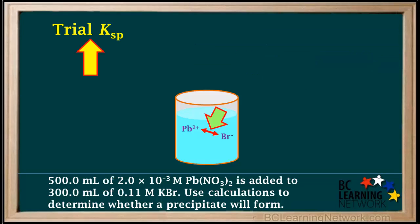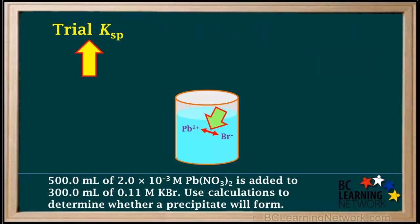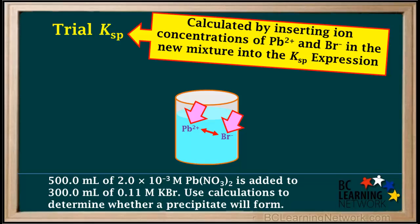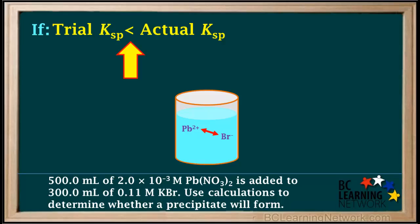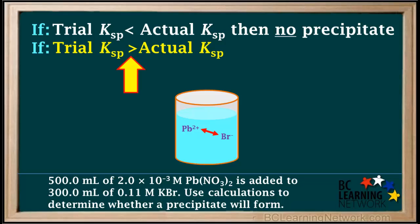In order to find out whether Pb²⁺ and Br⁻ form a precipitate, we need to determine what is called a trial KSP for PbBr₂. The trial KSP is sometimes called K-trial, experimental ion product, or simply ion product — here we'll call it the trial KSP. It is calculated using the concentrations of Pb²⁺ and Br⁻ in the new mixture, which are not at equilibrium. If the trial KSP is smaller than the actual KSP for PbBr₂, no precipitate will form; but if the trial KSP is greater than the actual KSP, a precipitate will form.